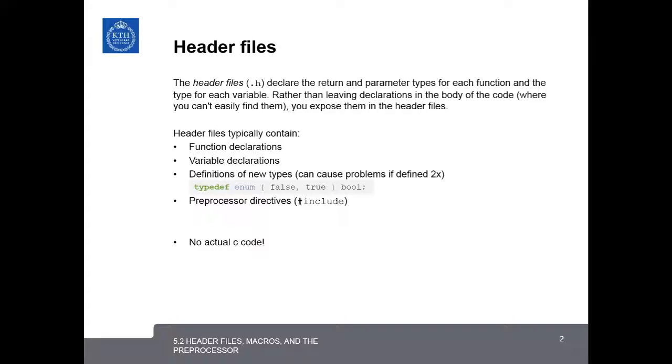Header files, which we denote with the .h extension, declare the return and parameter types for every function and the type for every variable. Rather than leaving the declarations in the body of the code where you can't easily find them, you can expose them in header files. Header files typically contain function declarations, variable declarations, definitions of new types, preprocessor directives like include, and importantly, header files do not contain actual C code.